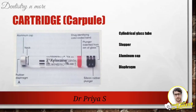The dental cartridge is a glass cylinder containing the local anesthetic drug along with other ingredients. A pre-filled 1.8 ml dental cartridge consists of four parts: a cylindrical glass tube, a stopper, an aluminium cap, and a diaphragm. The stopper is located at the end that receives the harpoon of the aspirating syringe; silicone stoppers are now used, eliminating the earlier need for paraffin wax and glycerin.